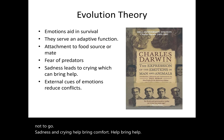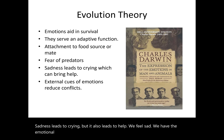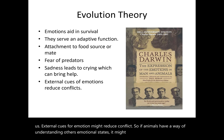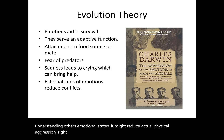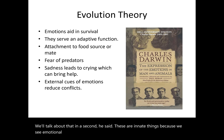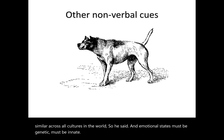Sadness leads to crying but also leads to help — those around us come and comfort us. External cues for emotion might reduce conflict, so if animals have a way of understanding others' emotional states it might reduce actual physical aggression. Darwin, in one of his later books, wrote about the universality of emotions. He said these are innate things because we see emotional states, physical states, facial expressions, and body postures very similar across all cultures in the world.